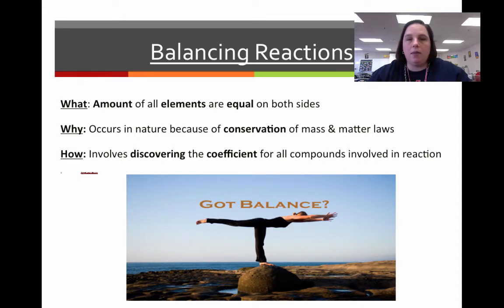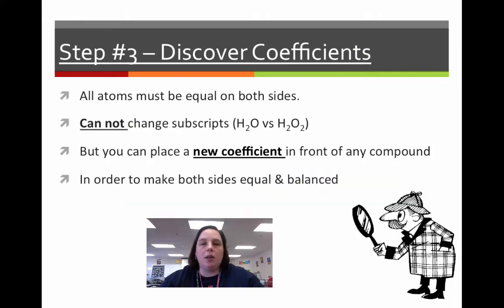You are going to discover the coefficients that you can put in front of the compounds. That is the only thing that you are allowed to do to balance a reaction. So, discovering the coefficients is step three. Remember, you cannot change the subscript, right? Remember, if you go from H2O, water, tasty, right? To hydrogen peroxide, H2O2, very different.